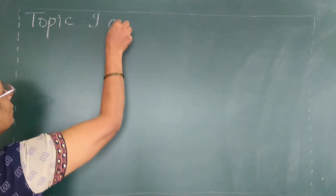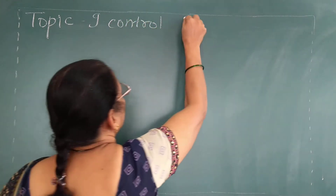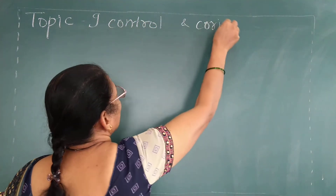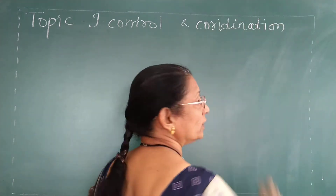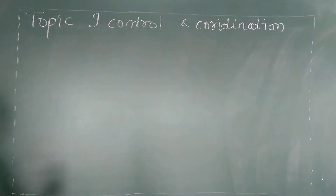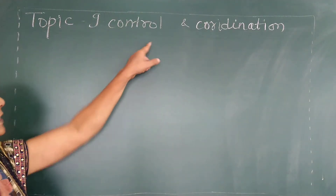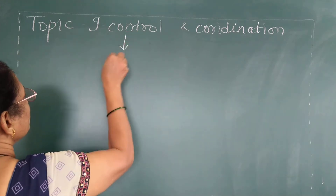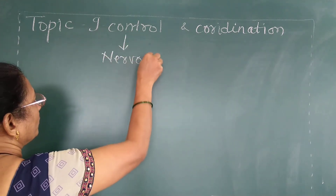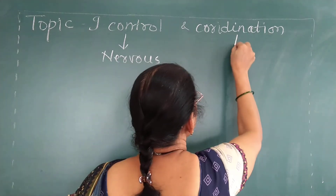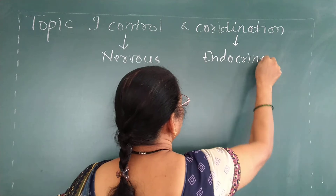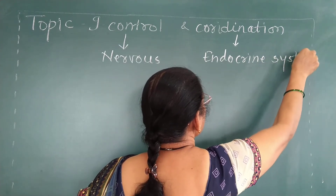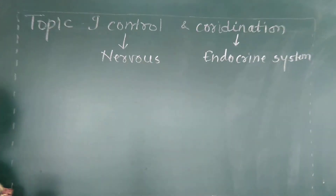We are going to start with topic number 9, control and coordination. Before starting with the topic, you should know the meaning of these two words: what is control and what is coordination. Control is concerned with the nervous system and coordination is concerned with the endocrine system. These two systems work in coordination with each other.